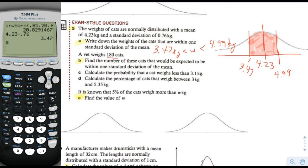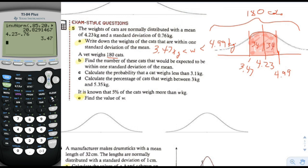A vet weighs 180 cats, so the whole region has 180 cats. Find the number of cats expected to be within one standard deviation of the mean. Of these 180 cats, how many are in that region? We know this region has 34% and this region has 34%, so the percentage inside is 68%, right? So we know it's 68% of 180 cats.